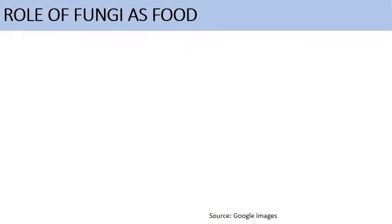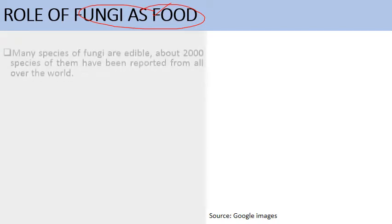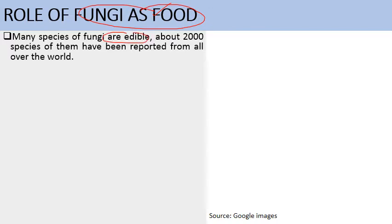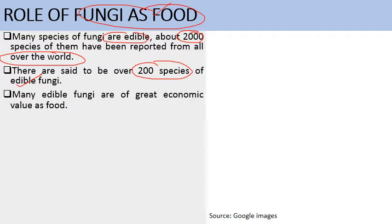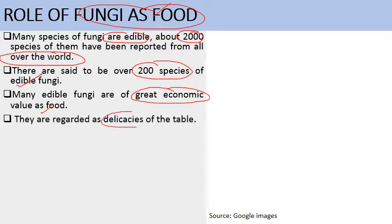Firstly, we will discuss the useful activities of fungi. First: role of fungi as food. Fungi plays a very important role as food because it is rich in nutrients, minerals and vitamins. It forms an important part of table delicacies. About 2000 species of fungi have been reported from all over the world, and approximately 200 species are edible. Many edible fungi are of great economic importance and are regarded as delicacies of the table.